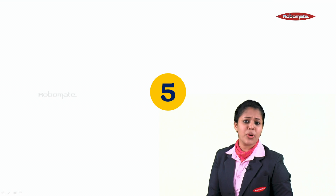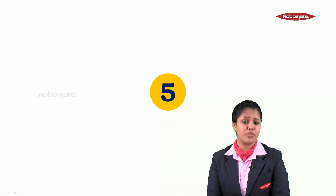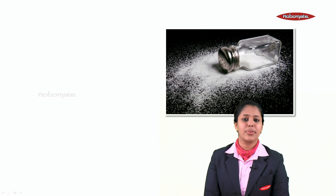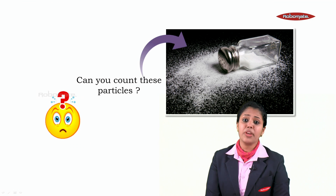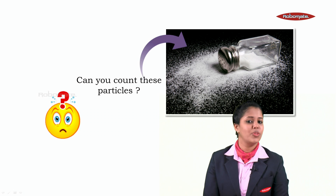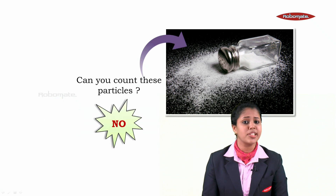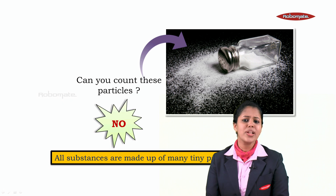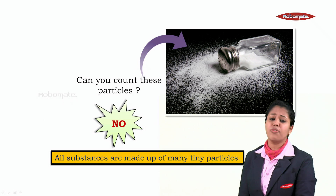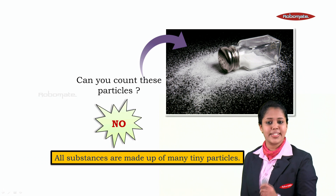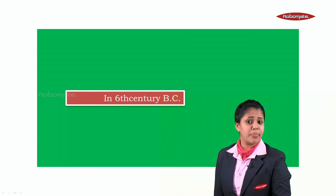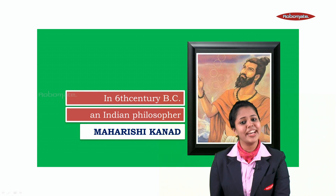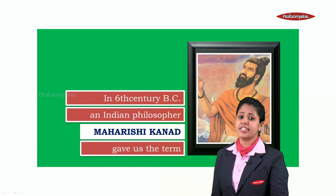Hello students, today we are going to start with the fifth chapter of science, that is Structure of an Atom. Students, can you count these particles? No, we cannot count these particles because they are very very small. All substances are made up of tiny particles. In the sixth century BC, an Indian philosopher named Maharishi Kanat gave us the term paramanu.